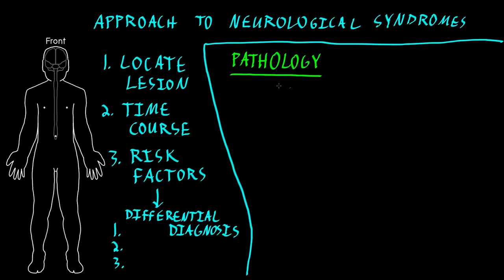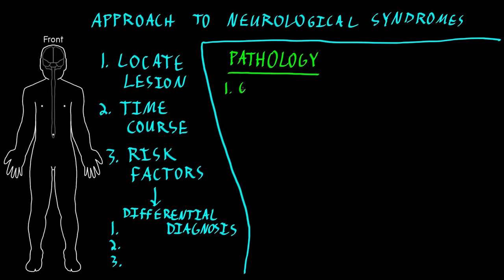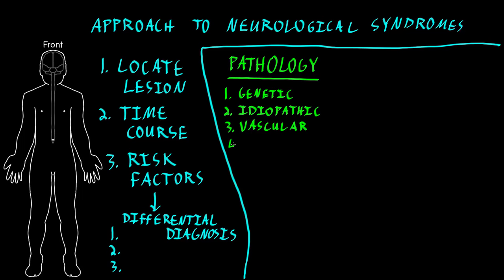I like to categorize the different types of pathology into 11 groups, though people do it in lots of different ways. The first category is genetic — disorders that affect the nervous system because of abnormalities of genes in the DNA. The second is idiopathic, a fancy word meaning we don't know the cause; many common neurological disorders are idiopathic. Third is vascular — abnormalities of blood vessels where circulation is not normal. Fourth is epileptic, involving disorders with seizures, which are a particular kind of abnormal electrical activity in the brain.